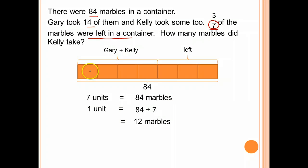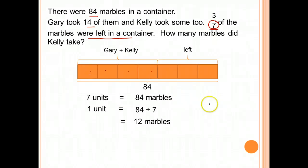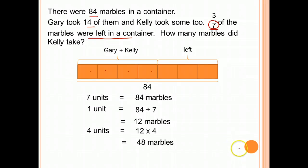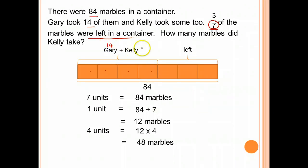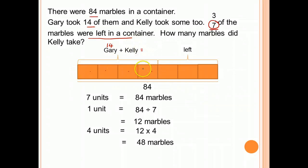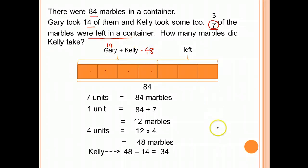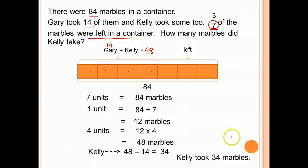We know that Gary and Kelly together took 4 units, so 4 units is 12 times 4, which is 48 marbles. Gary took 14 marbles, and we know the 4 units is 48 marbles. So Kelly would take 48 minus 14, which is 34 marbles.